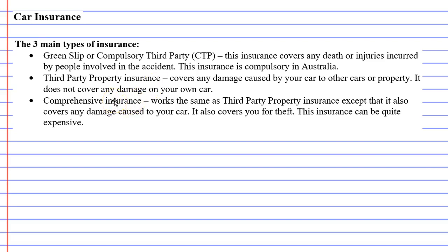Last of all, you have comprehensive insurance, which works the same as third-party property insurance except that it also covers damage to your own car, and it covers things such as theft. The problem with this insurance is that it can be quite expensive.